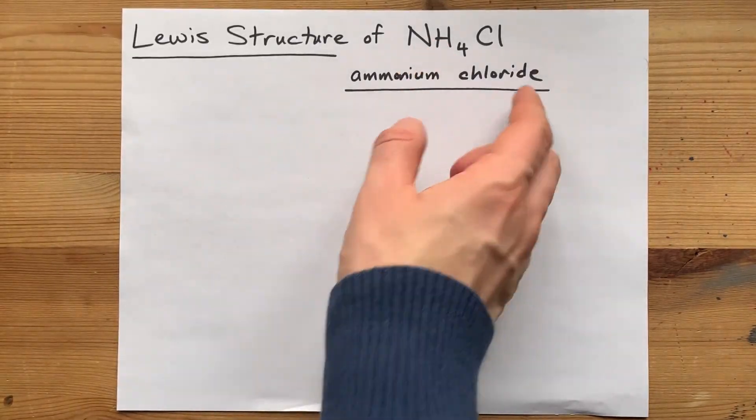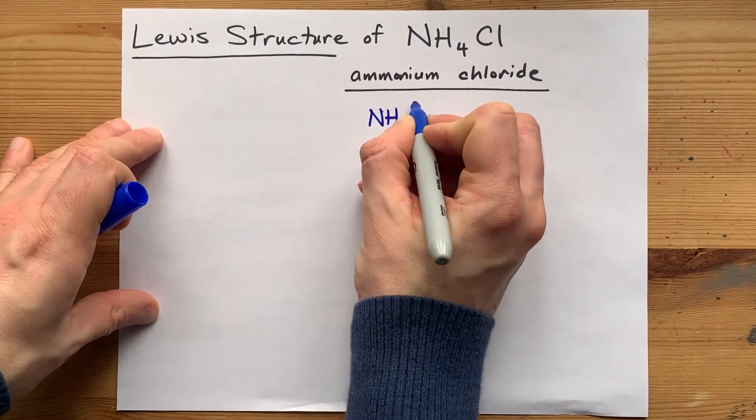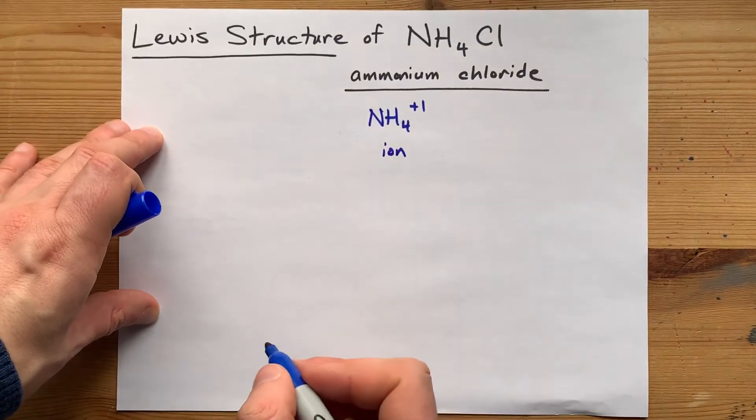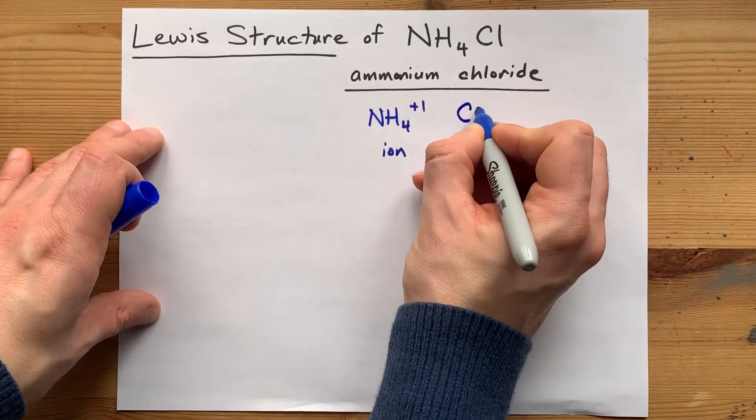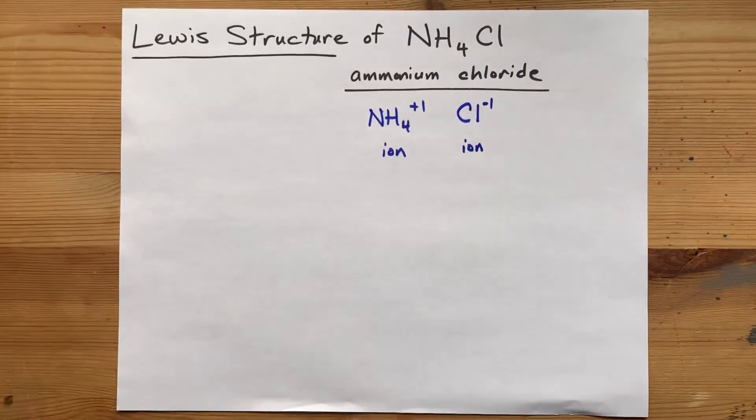Even though they are all non-metals, NH4 with a positive one charge is an ammonium ion. And chloride, Cl, with a minus one charge, is also an ion.